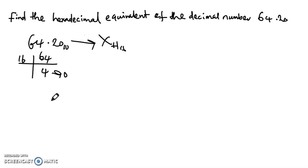Here we know that 4 is less than 16 so we simply stop, and then we take from bottom to top. This means that 64 decimal will simply give you 40 hexadecimal. So this is 40 H or maybe 40 base 16.